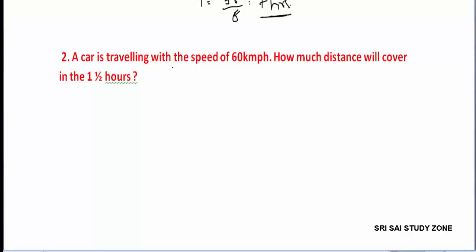A car is traveling with a speed of 60 km per hour. How much distance will it cover in 1 and a half hours? Using the formula D equals T into S, for formula-based students, D equals time into speed.